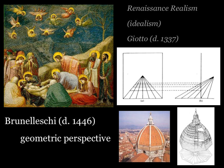Brunelleschi was obsessed with classical art and determined to create art as realistic as the classical artists had done. He worked to improve his sketches to make them as realistic as possible, developing a precise and mathematical way to create the illusion of three dimensions on paper or canvas. He realized that when looking at a horizon, all lines in your eyesight vanish to a point — a vanishing point — and that drawing a grid system from that point allowed him to create very lifelike perspective images.